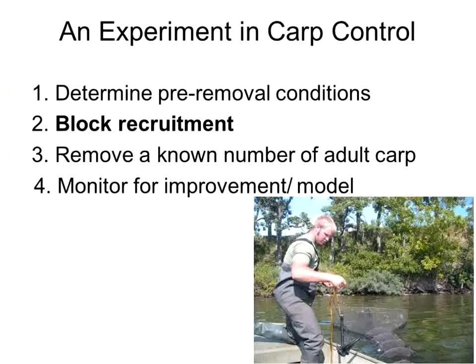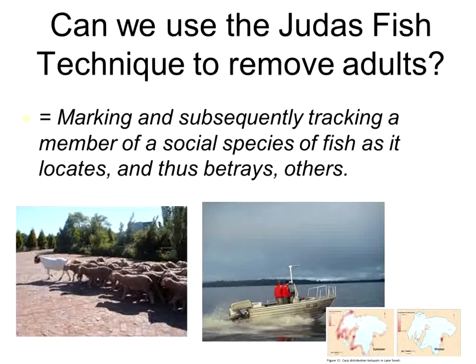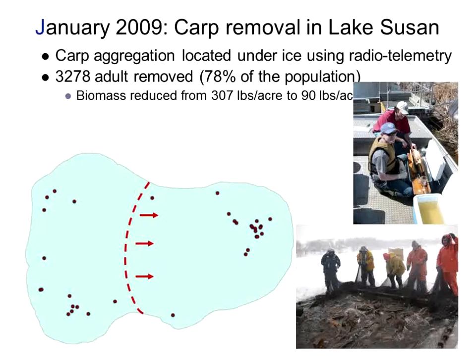We then started to institute a control program. We figured out how to control the recruitment — another topic — but once you can control recruitment and production of a fish, it makes sense to remove the adults, because then you plug the hole in the boat. What we wondered was whether we could use radio-tagged fish as Judas fish — indicators of where the population was. This technique was originally developed for goats on tropical islands, based on the idea that a social species can be marked and tracked to betray the location of the group.